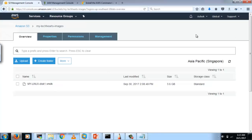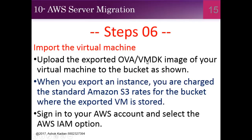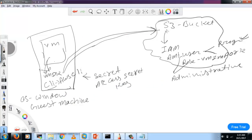You may have exported your VM with VMware tools in VMDK format or OVA format — AWS supports multiple formats for migration. Note that uploading to S3 is not a free service. You are charged standard S3 rates for the bucket where the exported image is stored. For example, if your VM image size is 100 GB, you need to pay for 100 GB at S3 prices.